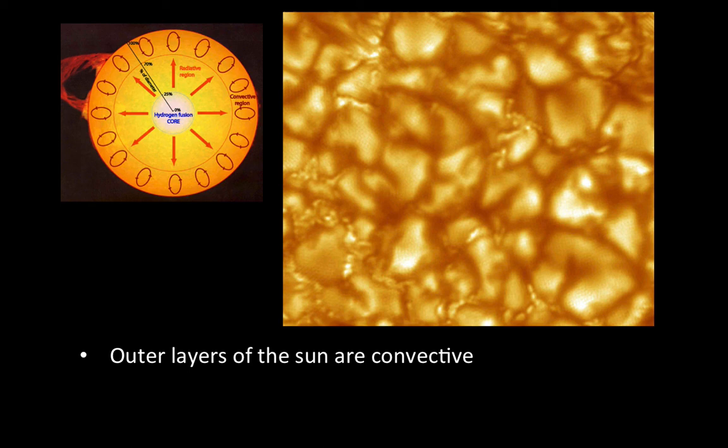Since the universe is mostly empty space, heat transfer mechanisms like conduction and convection that require collisions and motion of matter can't move heat very far or very quickly. But radiation, light, travels fast, faster than anything else we know of, and it doesn't require the presence of matter.